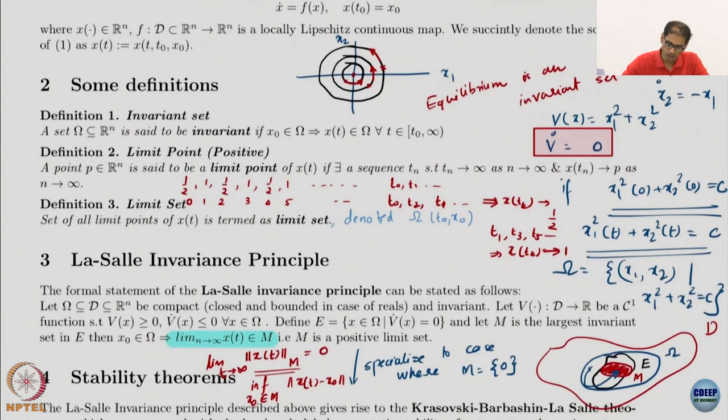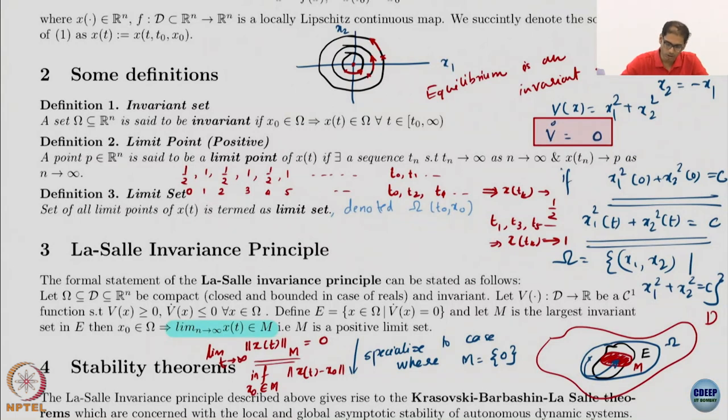One question, do you think this circle, that is the set omega, this is obviously invariant, right, this is by the equation. Is it compact? Is it closed and bounded? Boundedness is obvious, I hope, because x1 square plus x2 square is c.